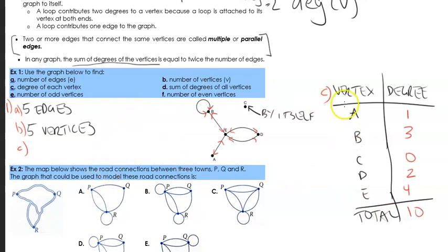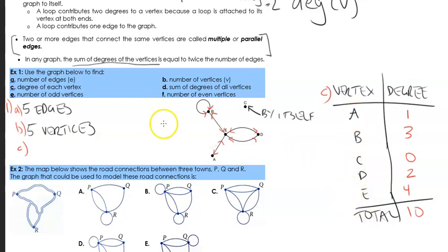Just to double-check: the sum of the degrees of the vertices equals twice the number of edges. The total sum is 10, and twice the number of edges is 2 × 5 = 10. That checks out. For part D, the sum of the degrees of all vertices: the sum is 10.